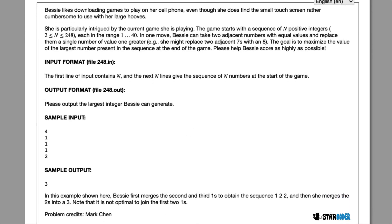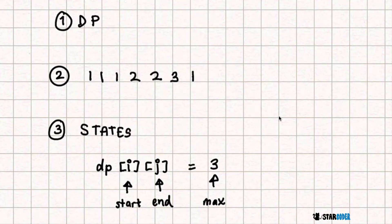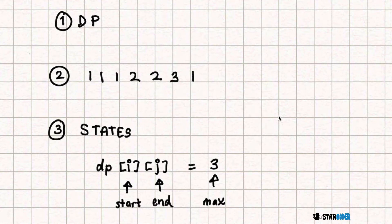Let's look at the algorithm for this question. The way we're going to solve this is through dynamic programming, or DP. Since there's no definite strategy to find the biggest number, we're just going to need to try all of them and then find the biggest one using dynamic programming.